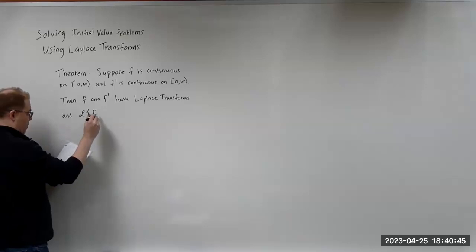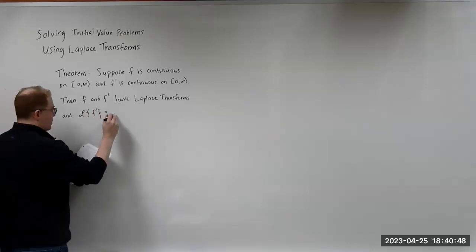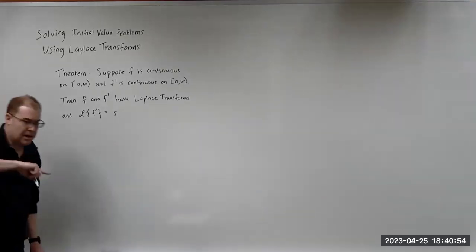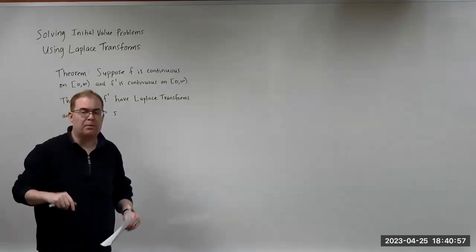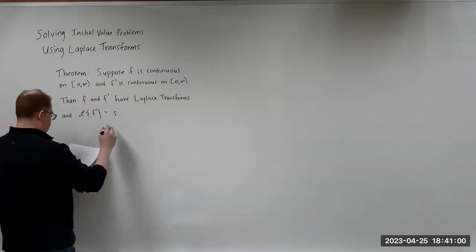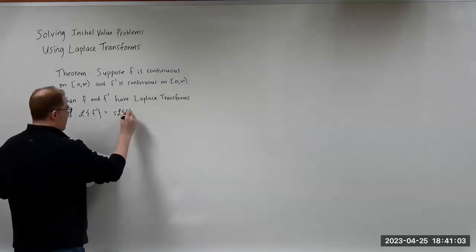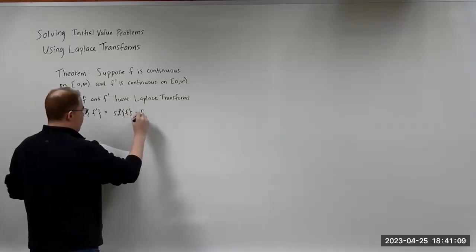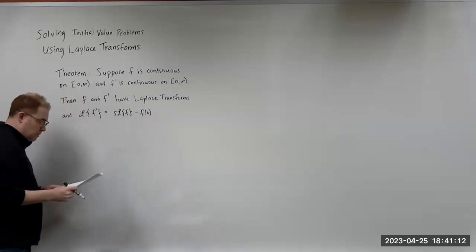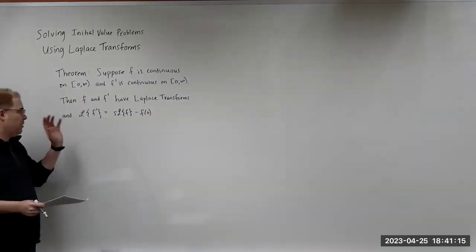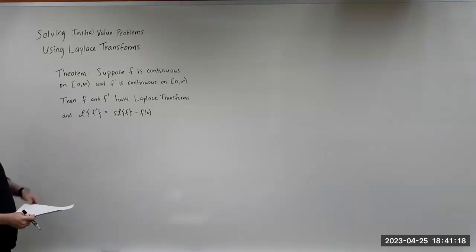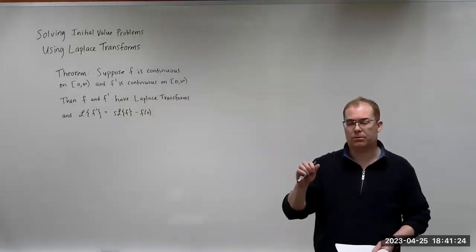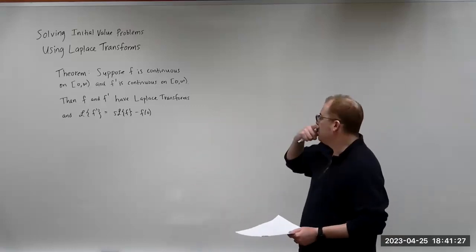It turns out that the Laplace transform of F prime is equal to S times the Laplace of F minus F of zero. Remember that S is basically going from the time domain to the spatial domain. This result is really important when we get ready to apply the Laplace transform to an initial value problem.